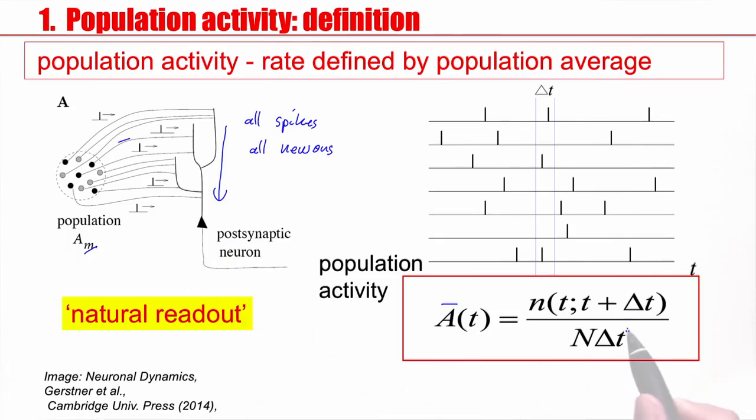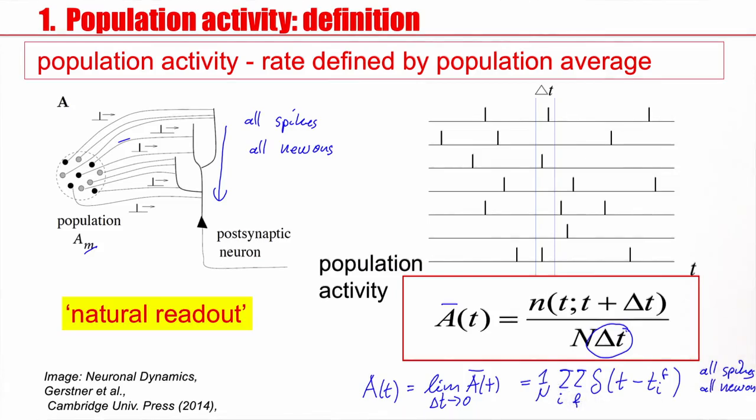We still have this little delta t in here and we can get more independent from delta t if we say the activity is the limit of this a bar of t that I've defined here in the limit delta t to 0. And then this would just be, if you make it really small, this would just be the sum of all spikes. And for those who are familiar with this notation, this is the Dirac delta function or Dirac delta distribution. I sum here over all neurons and all spikes. So this is the sum over all spikes and all neurons. And I still have the 1 over n.